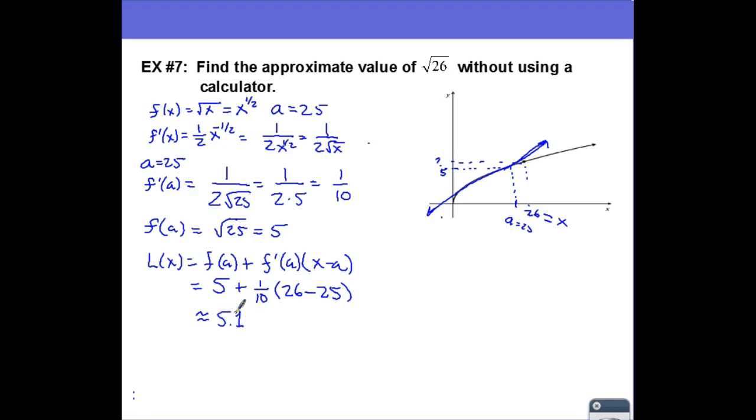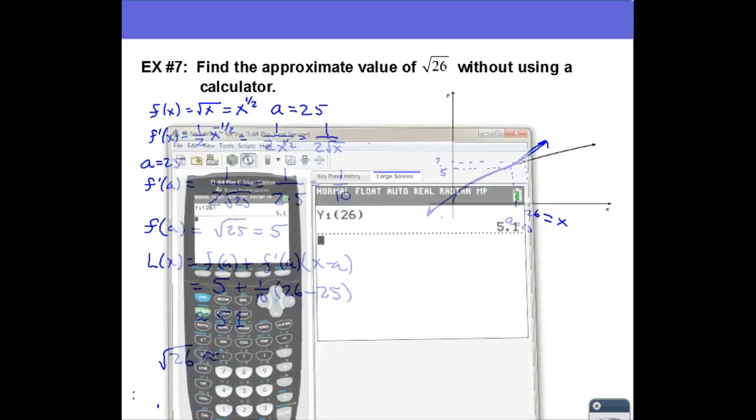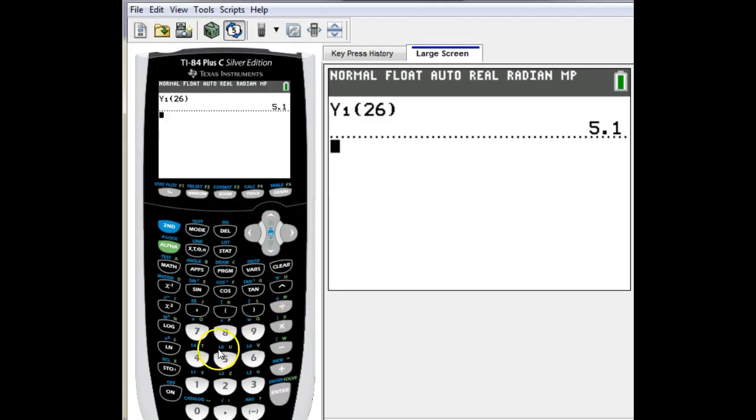Now just out of curiosity, what is the square root of 26 approximately? So let's go to our calculator and let's just do this as a check and see how close we got with our linear approximation. So 5.099 is pretty close to 5.1, so I think we did all right on that one.